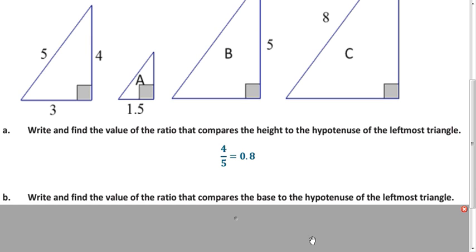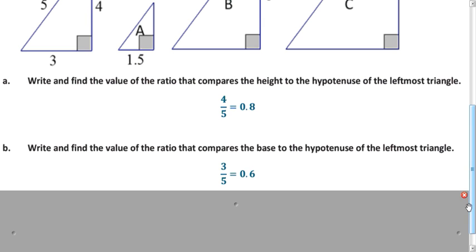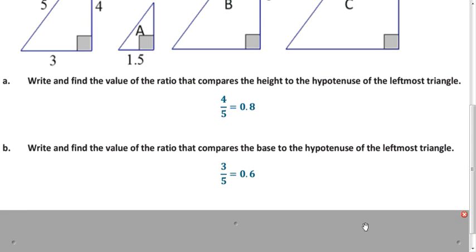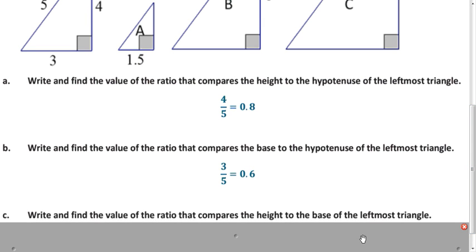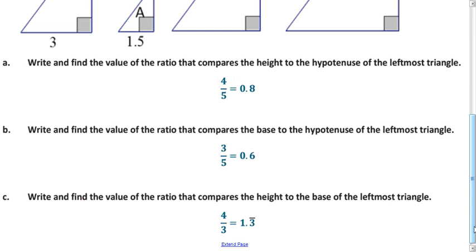What about a ratio that compares the base to the hypotenuse? That would be 3 divided by 5, which is 0.6. And finally, the height to the base: the height is 4 and the base is 3, so 4 thirds, or 1 and 1 third, or 1.3̄.